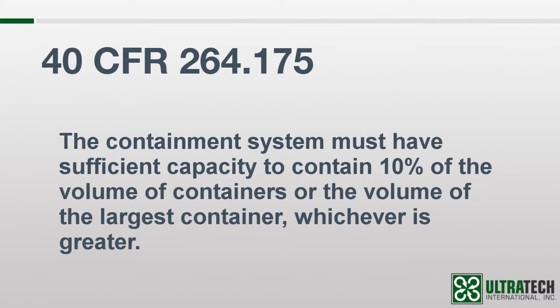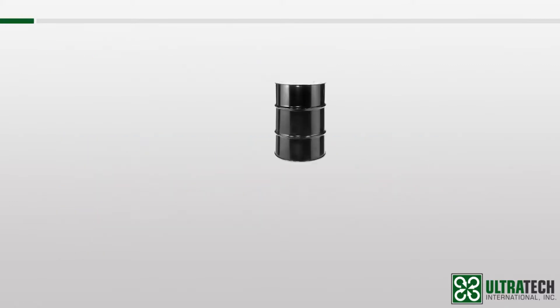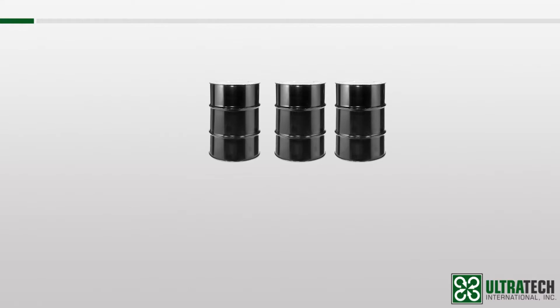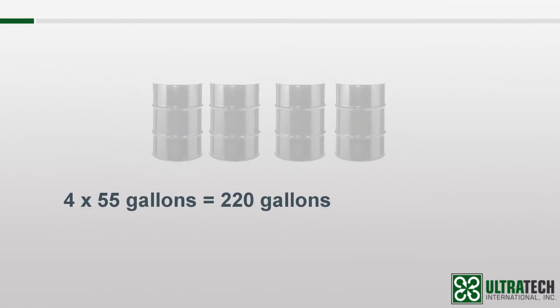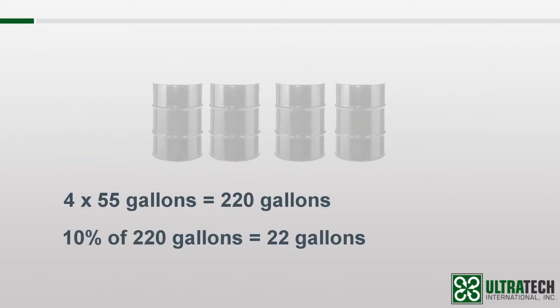We'll start with a scenario where we need to have spill containment for four 55-gallon drums. Again, the regulation states that whatever we use must have sufficient capacity to contain 10% of the volume of containers, or the volume of the largest container, whichever is greater. A quick calculation tells us that the total of those four 55-gallon drums is 220 gallons. 10% of 220 is 22.